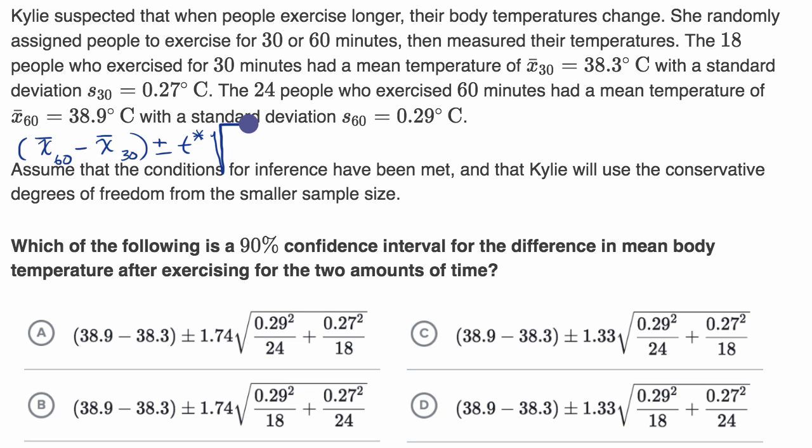And that is going to be the sample standard deviation of the 60 minute group squared over the sample size of the 60 minute group, plus the sample standard deviation of the 30 minute group squared, divided by the sample size of the 30 minute group.